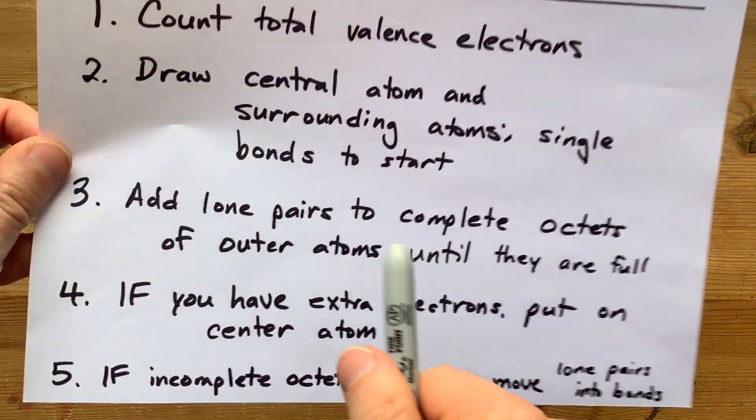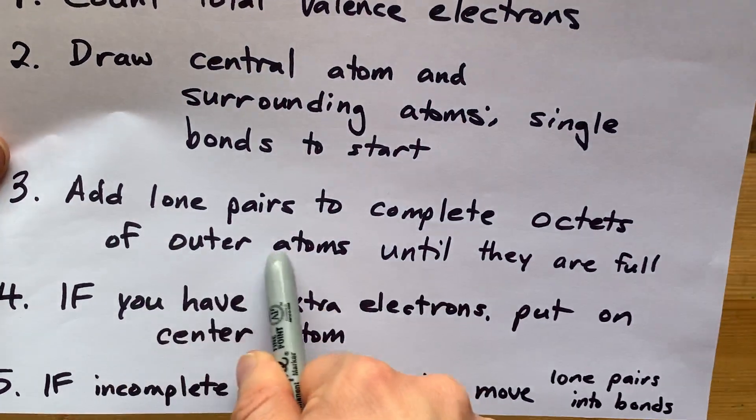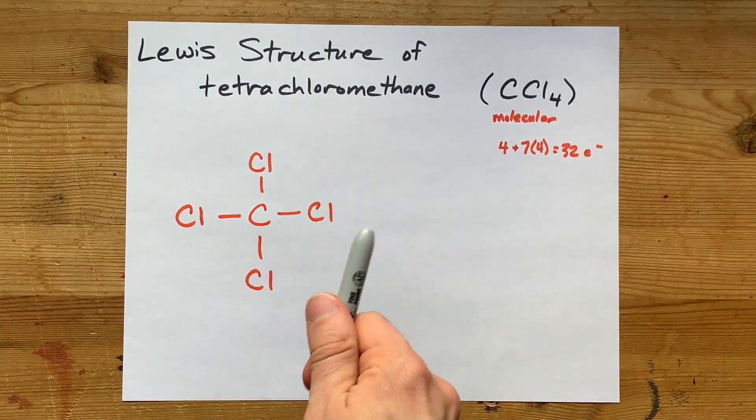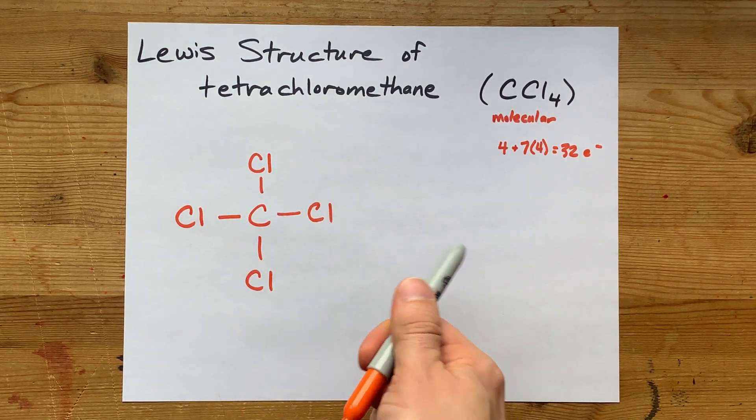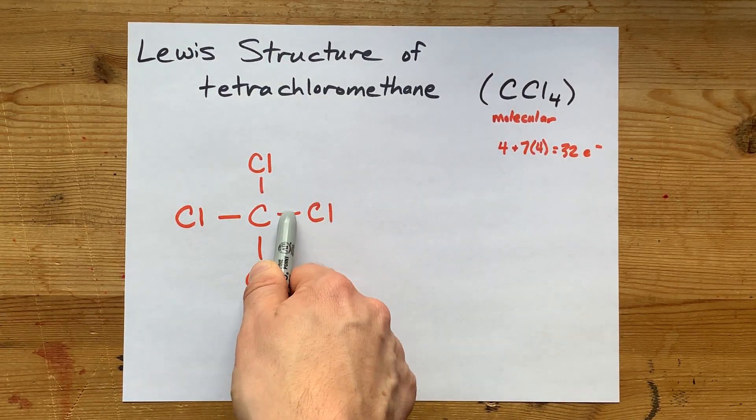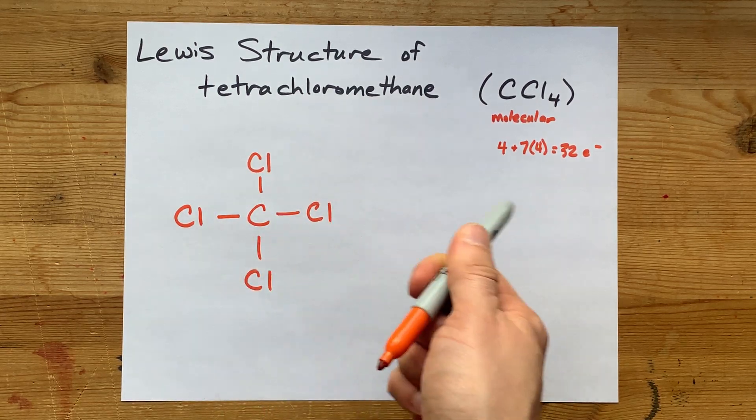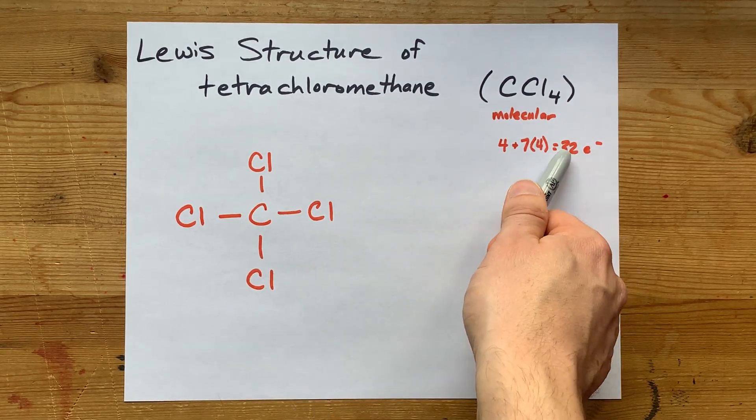That's it so far. I'm going to add lone pairs to complete the octets of the outer atoms until they are full. I already have 2, 4, 6, 8 electrons total. Each of these chlorines already has two electrons around it. They want 8 to satisfy the octet rule. I just have to be careful not to go over 32 total.